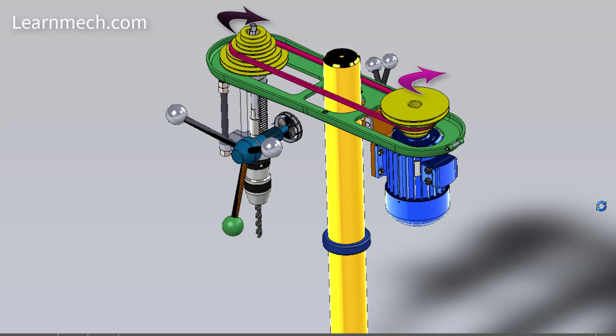The rotary motion of the motor is transmitted to the spindle by using V belt and V pulleys. Vertical feed is applied using the handle.